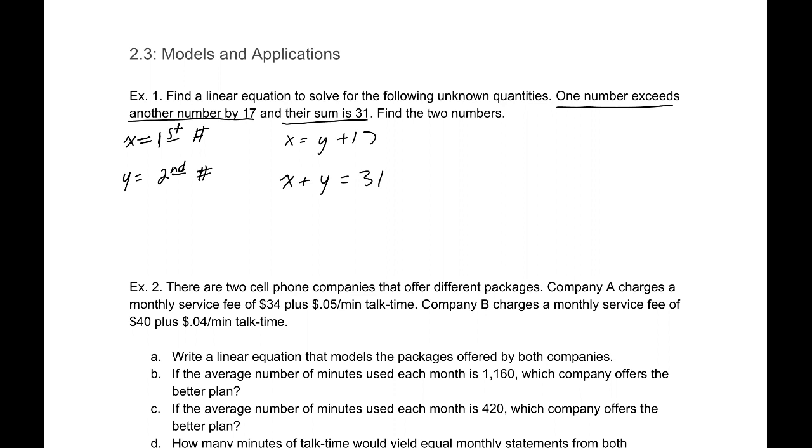I'm going to use a method called substitution. We have two equations. Everywhere I see an x, I'm going to plug in y plus 17. So this is y plus 17 plus y equals 31. Combining like terms, this would be 2y plus 17 equals 31. Subtracting 17 from both sides, we get 2y equals 14. Dividing by 2, we find that y equals 7.